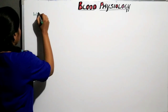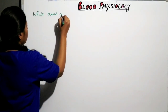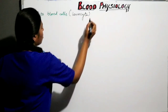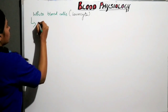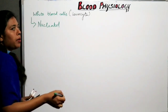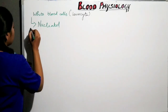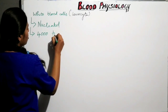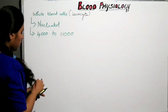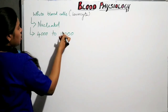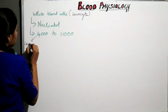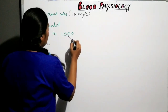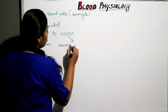Our next topic is white blood cells, also called leukocytes. They are nucleated formed elements, whereas RBCs are non-nucleated. The normal amount of white blood cells is 4,000 to 11,000. When WBC count decreases below 4,000 it is called leukocytopenia, and if it increases above 11,000 it is called leukocytosis.